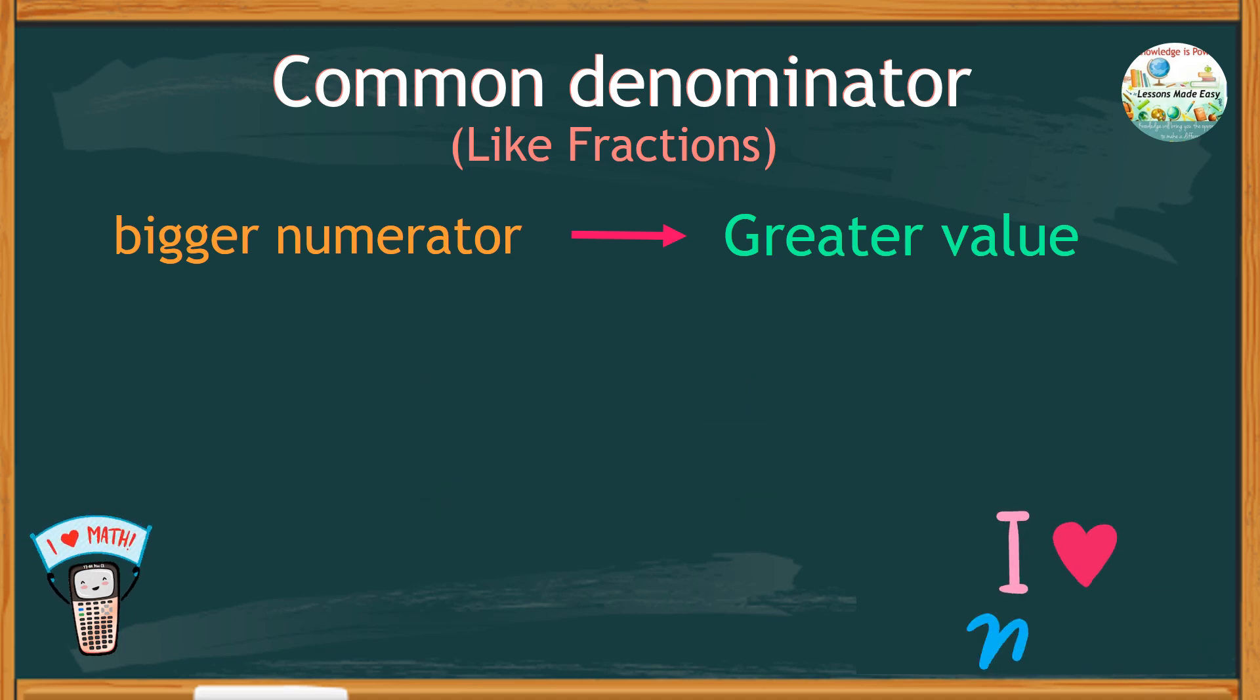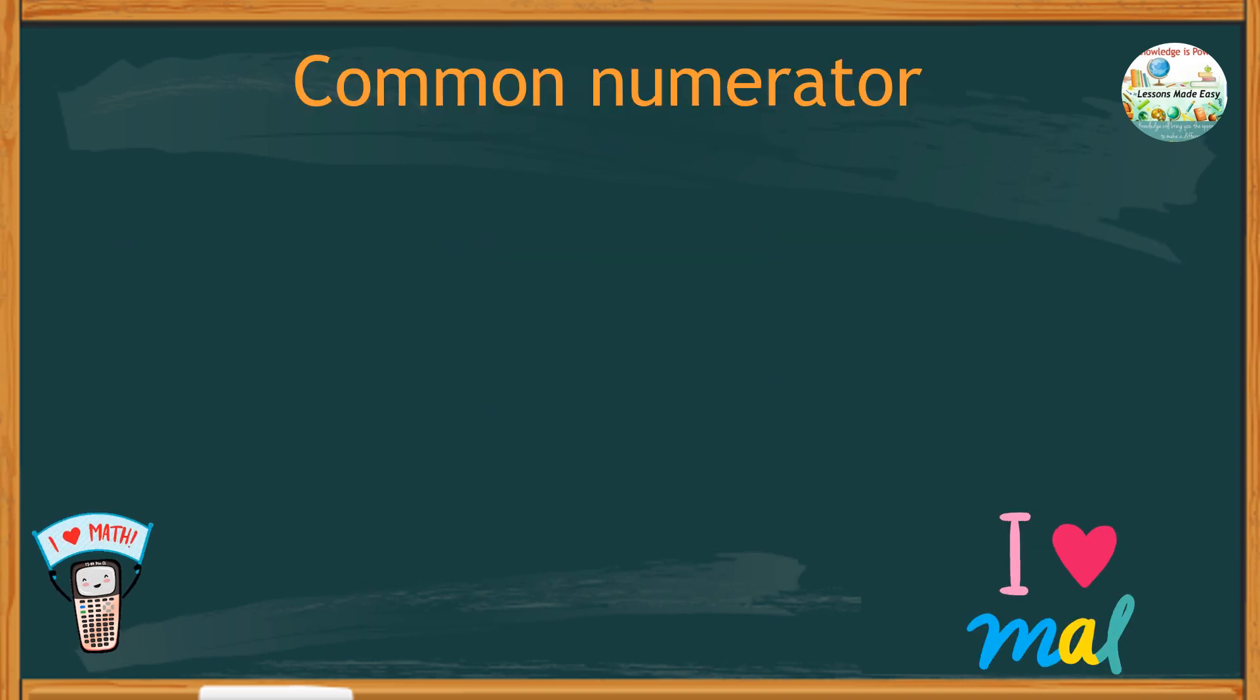Let's have another one. A common denominator of 10 and numerators 9 and 3. Obviously, 9 is more than 3, and therefore 9 over 10 is greater than 3 over 10. How about when fractions have common numerator?